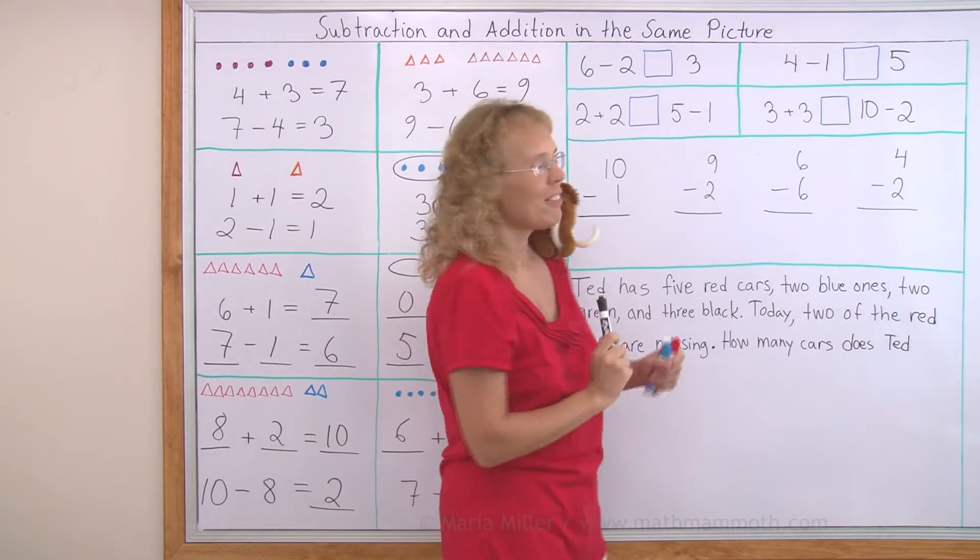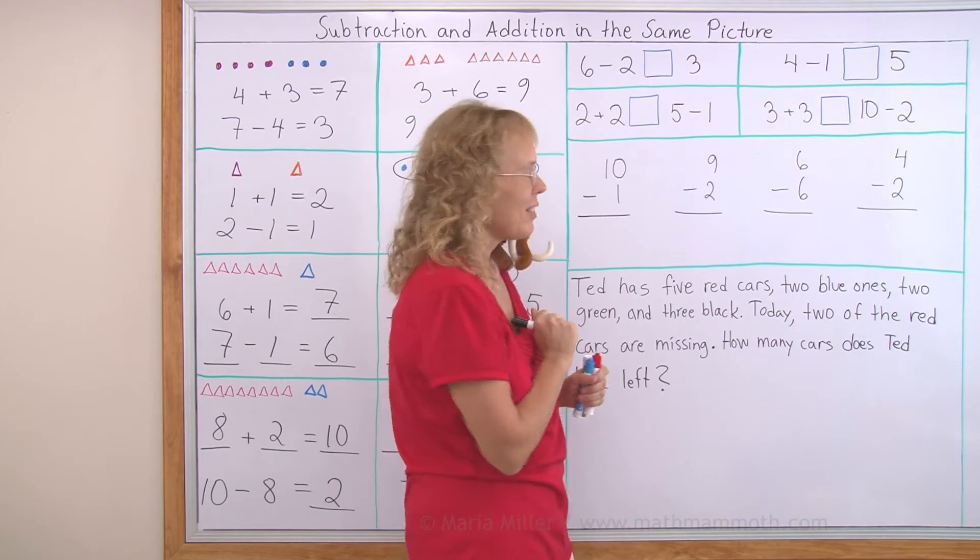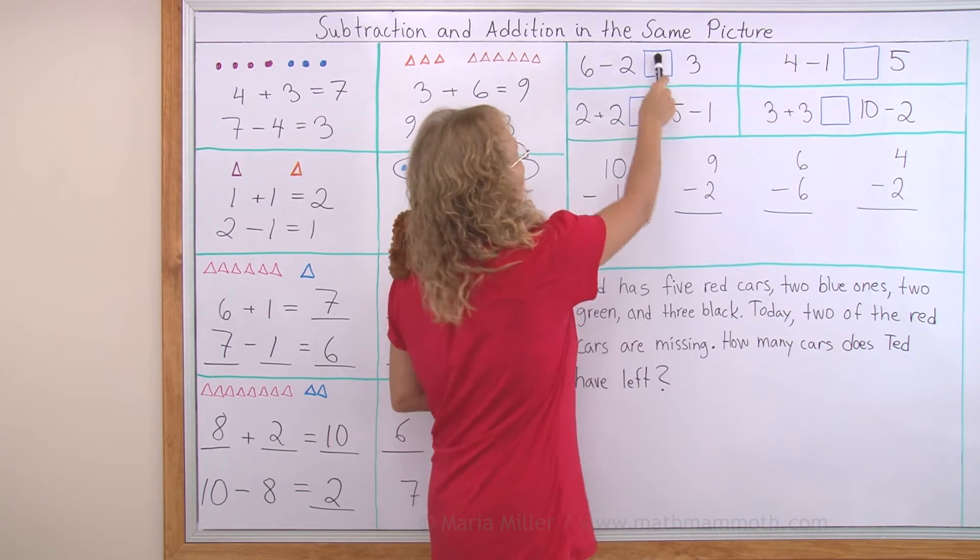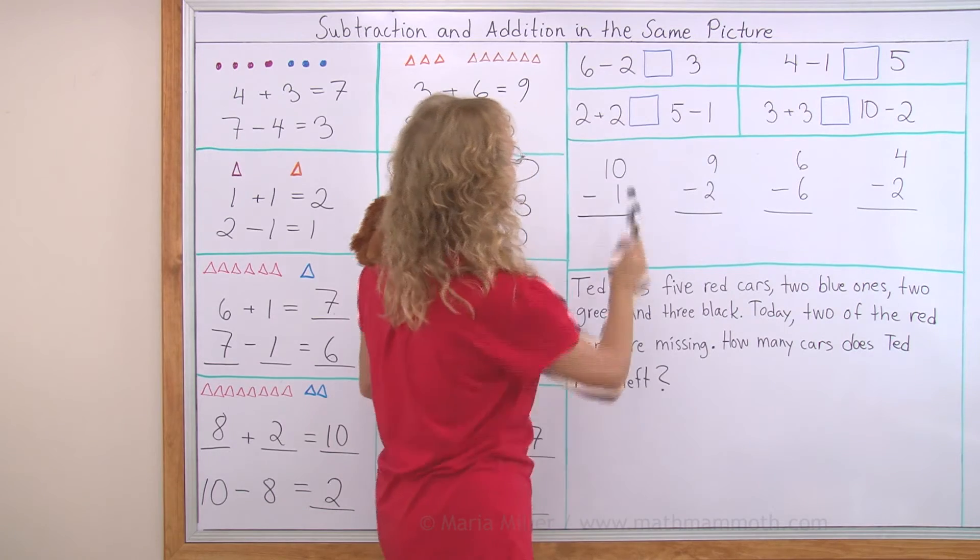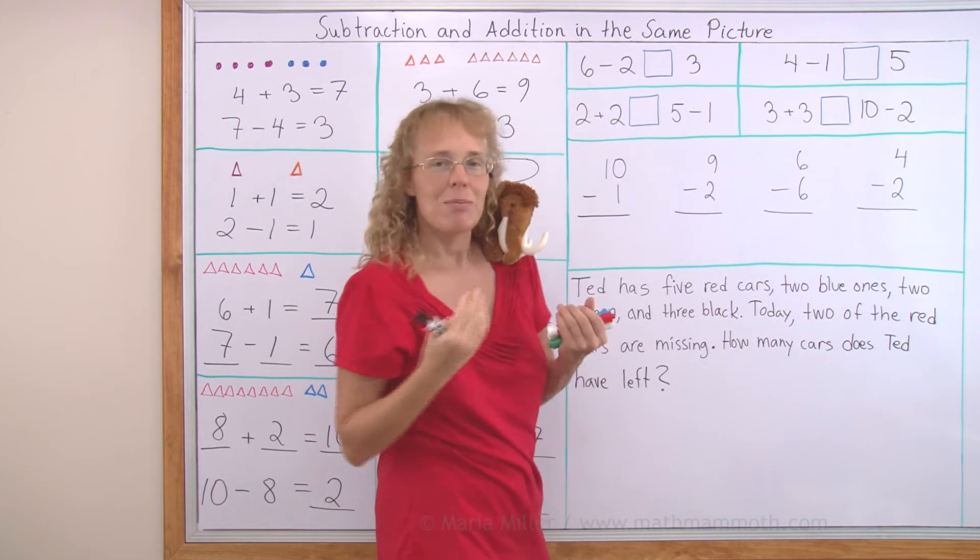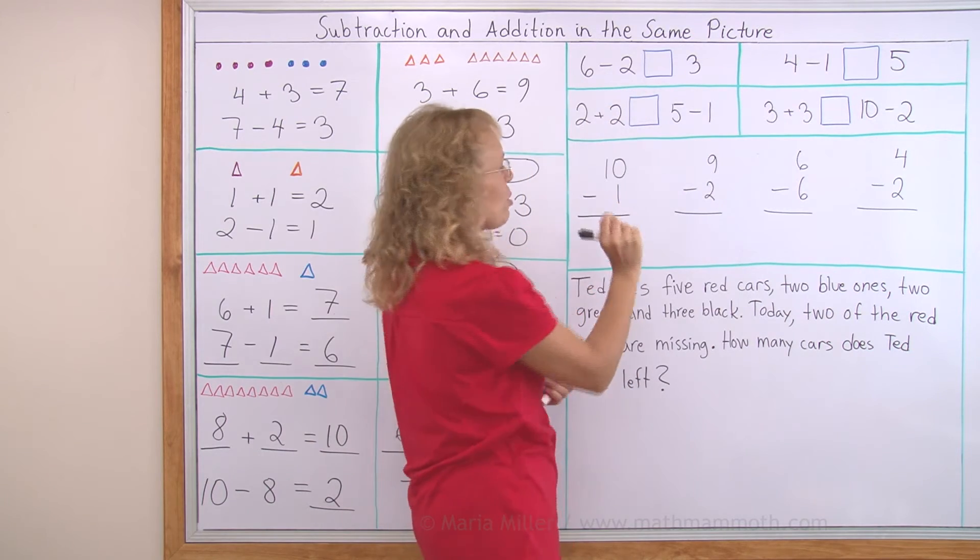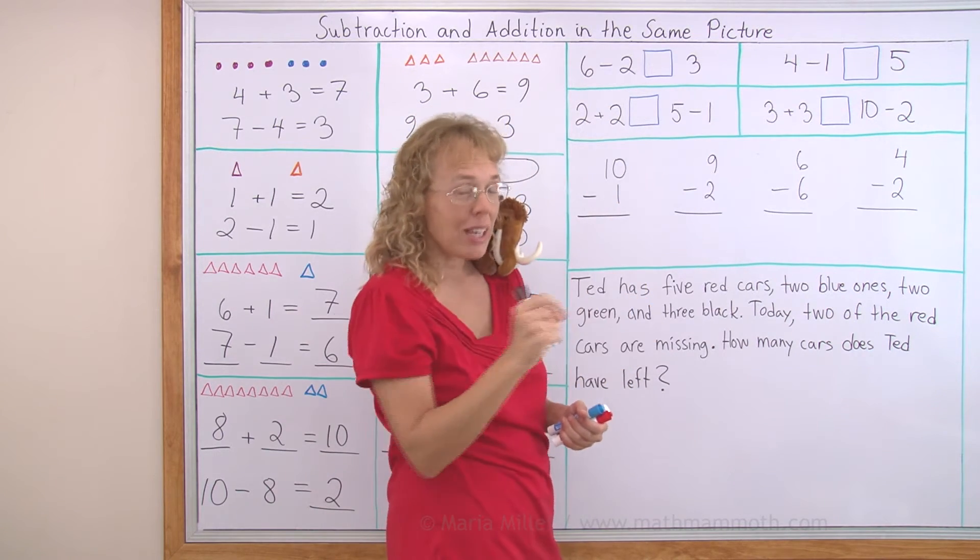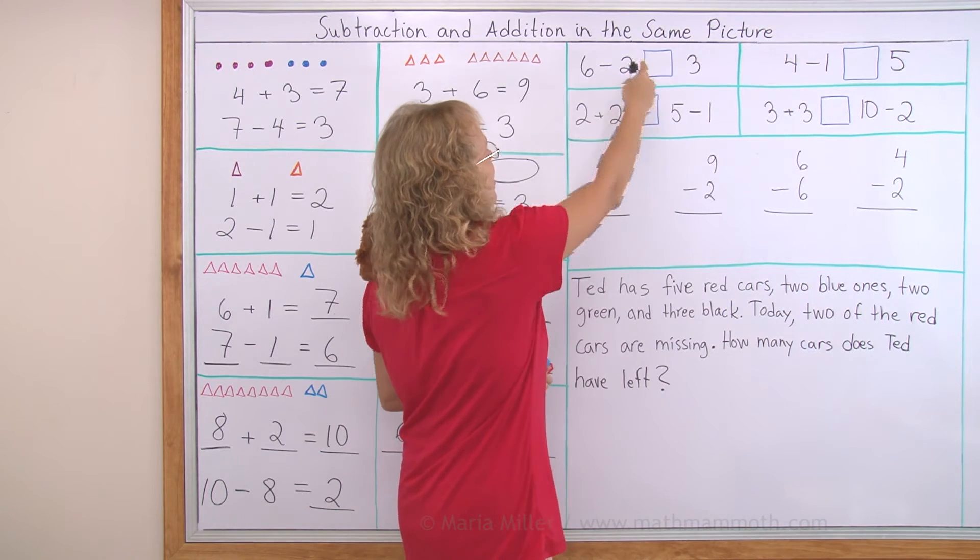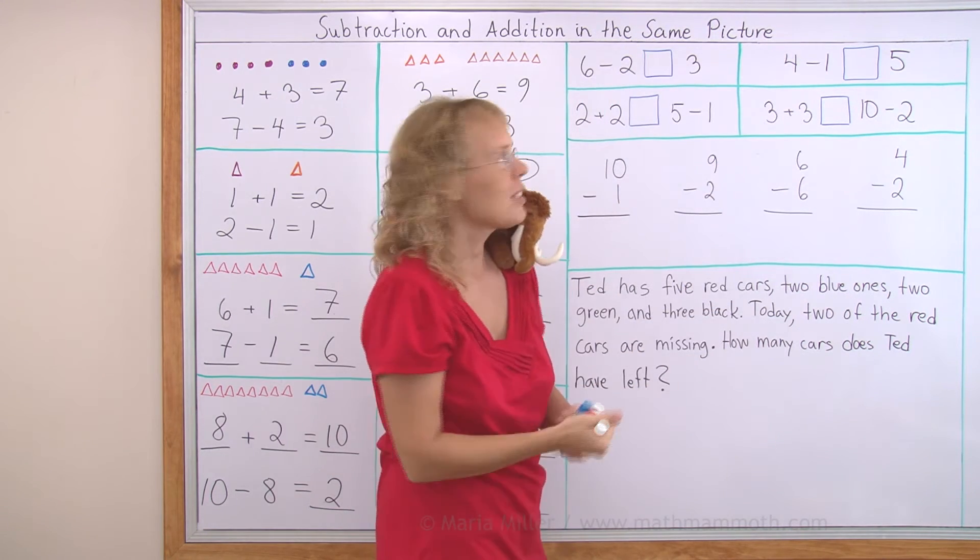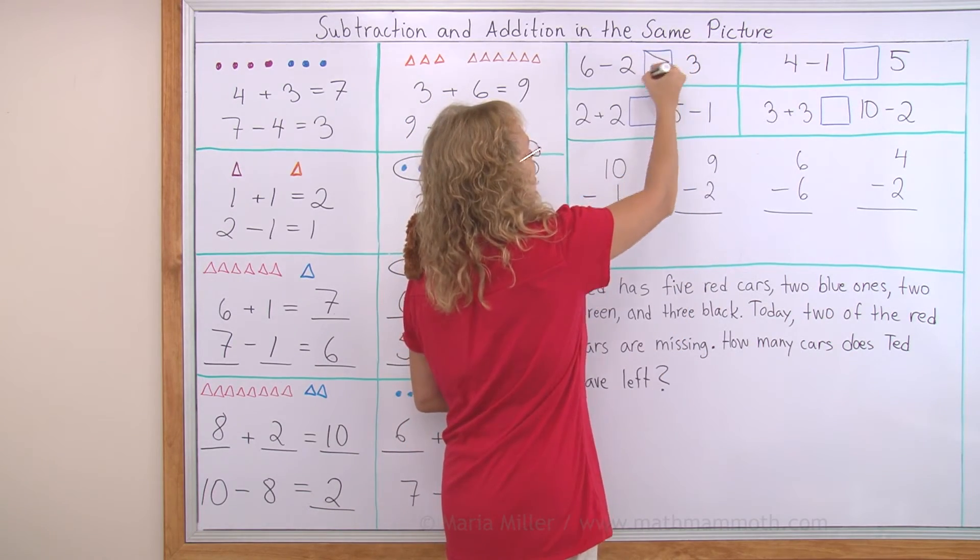Now over here we have some of those alligator mouth problems again. Is that it? Mammoth mouth problems, yes. Greater than or less than. And this time we need to first solve 6 - 2. You can count down. Do you remember that? Count down two steps from six. Or count backwards, like six, five, four. So this whole side here is four and then three. Which one is greater? Four is greater than three.